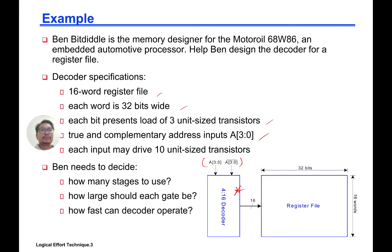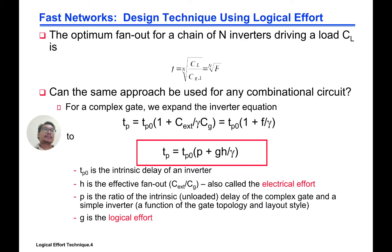Each input may drive 10 unit-size transistors. Ben needs to decide how many stages to use in the decoder, how large each gate should be, and how fast it can operate. The decoder accepts an address and fetches the corresponding entry from the register file. We've already seen that the optimal fanout for a chain of N inverters driving a load CL is F equals the Nth root of capital F, where capital F is the overall fanout CL over CG1.